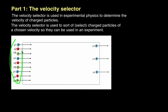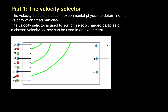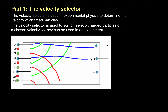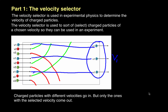If we have a whole bunch of different charged particles all with different velocities, some of them will be deflected upwards due to their velocity and will never exit the box. Some will be deflected downwards and will never exit the box. Only the ones with the exact right velocity will manage to make it through undeflected. Scientists know that the charged particles leaving the velocity selector have the velocity they've chosen — charged particles with different velocities go in, but only those with the selected velocity come out.